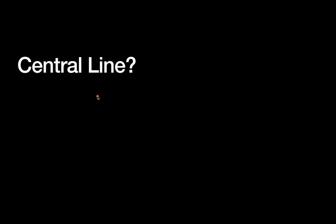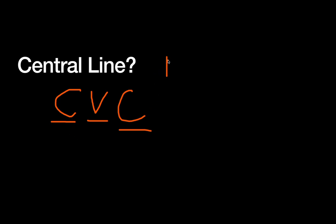First, just to get back to the absolute basics — what is a central line? Another name for these is a central venous catheter, or CVC, which is a little bit more explanatory. It's a catheter in a vein that drains centrally — central alternatives to peripheral IVs or PIVs. The "central" means, at least for lines that go into the upper body, typically the cavoatrial junction, or where the SVC drains into the right atrium. For lines coming through the leg, such as femoral lines, those usually just drain into the IVC — a fairly central place in a large diameter vein relatively close to the heart.